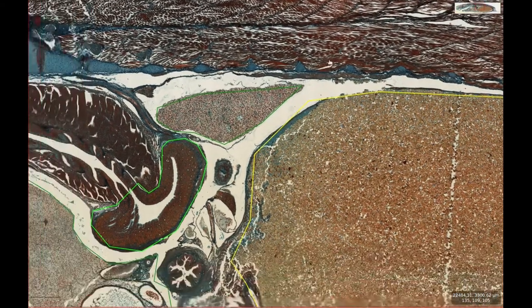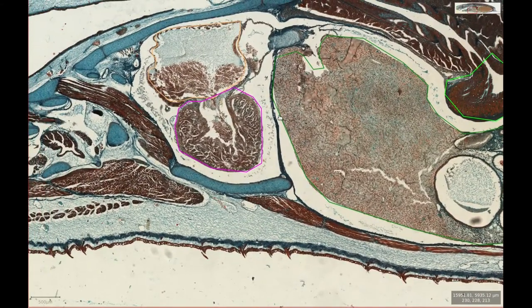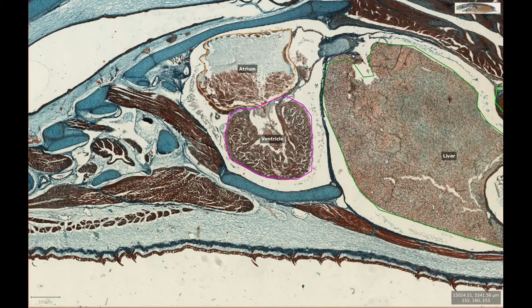In this slide we can see the heart, which is in a much clearer plane of section. The hearts of sharks have only two chambers, as opposed to the three in reptiles and amphibians or four in mammals. These are the atrium, which receives blood, and the ventricle, which acts as the main pump to drive blood around the body.